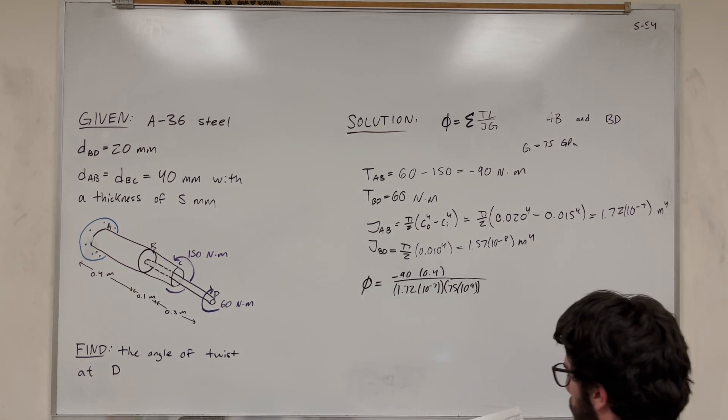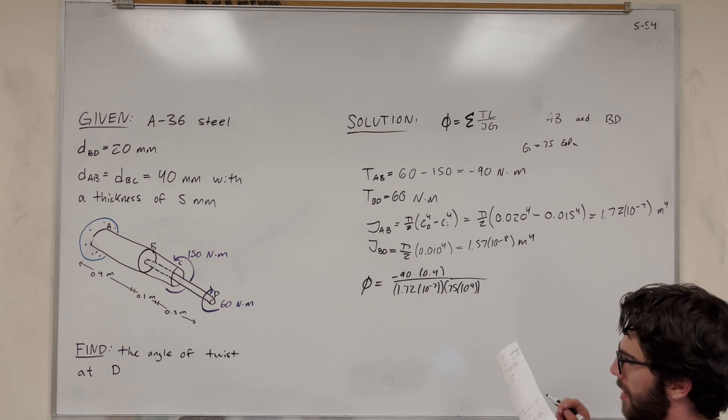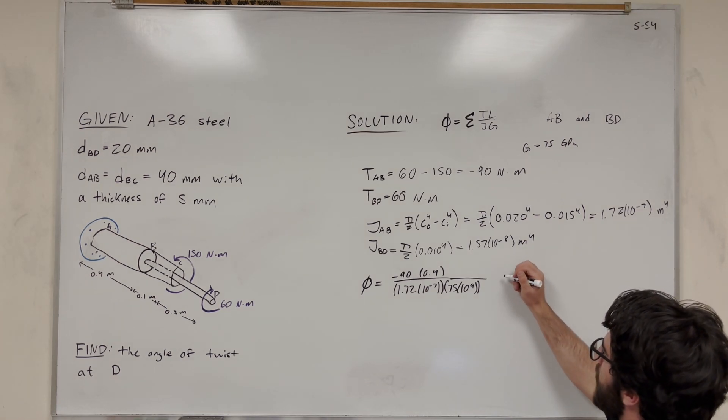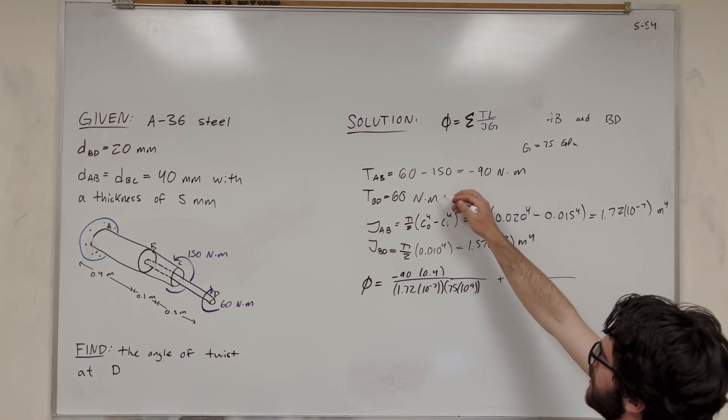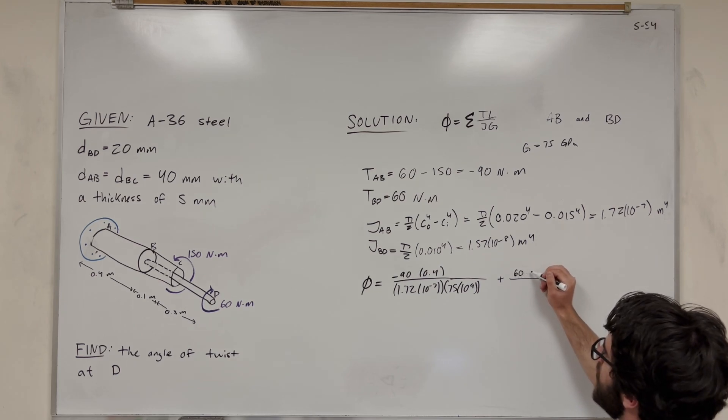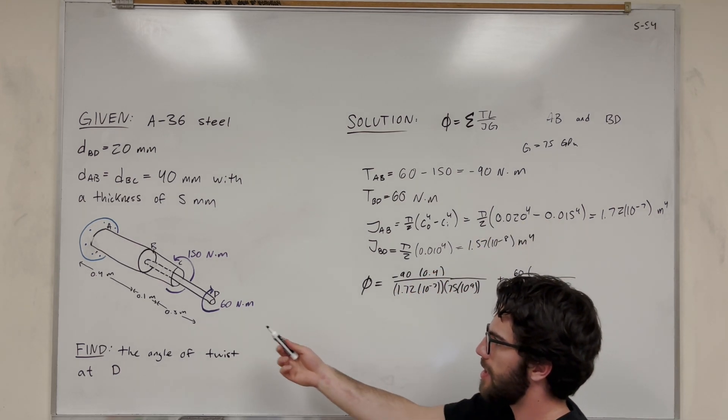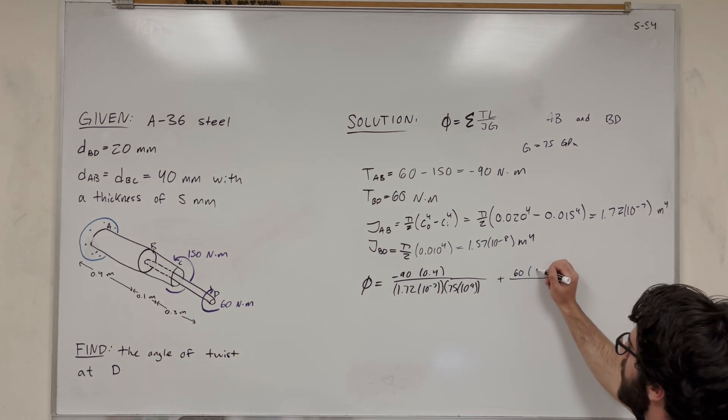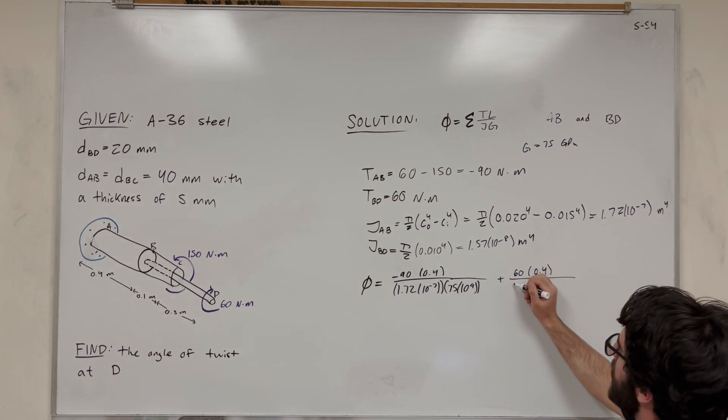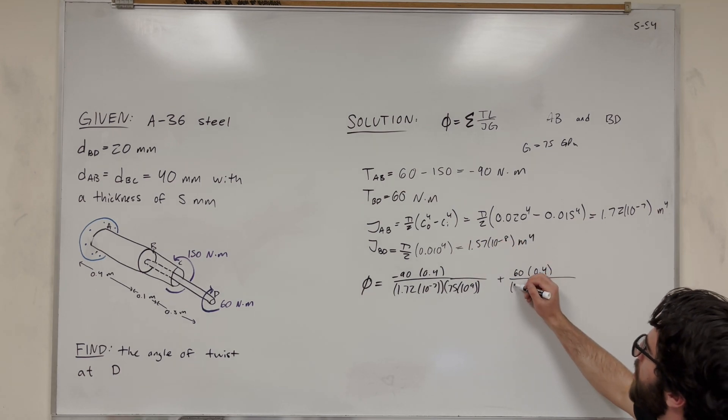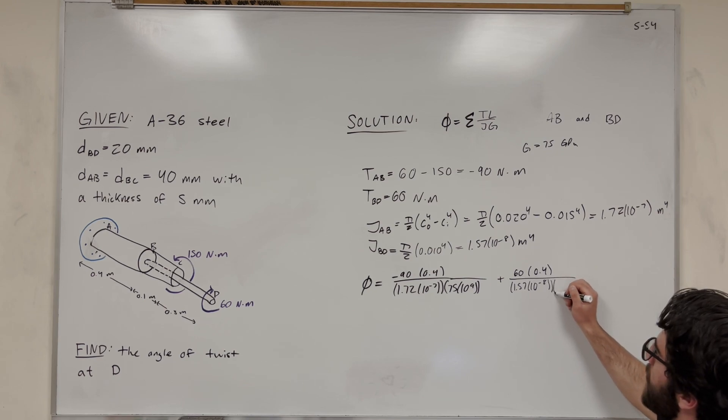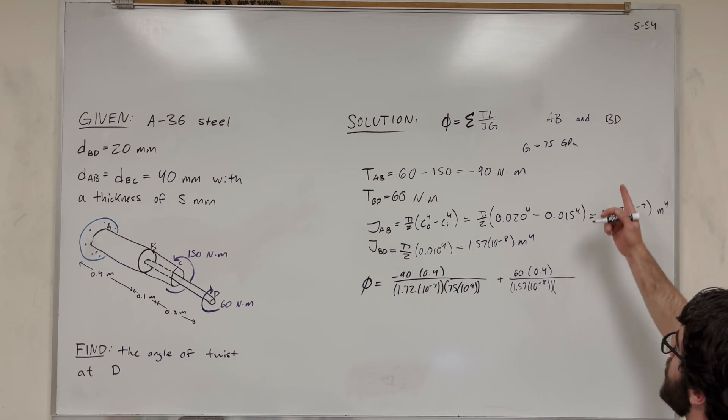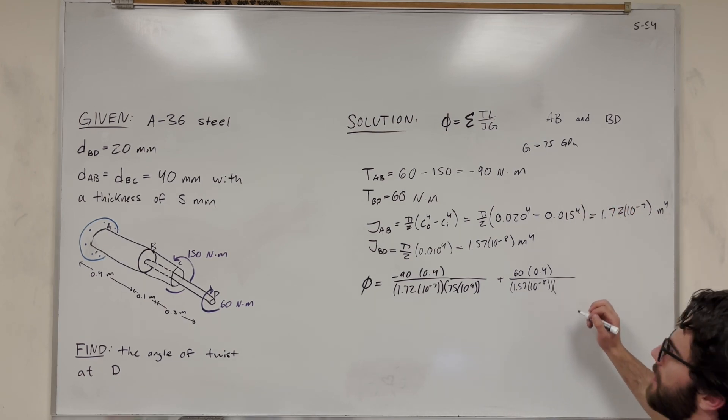So this is our first half here. Then we need to do it for BD. So then we're going to add the next one. And this is a positive 60 torque, so we're going to add a 60 torque. Then we're going to do the length. So the length of BD is the 0.1 meters plus the 0.3 meters. So it's going to be 0.4 again. Then the polar moment of inertia, 1.57 times 10 to the negative 8th. Then we've got to multiply that by the modulus of rigidity, not elasticity if I said that. So this is 75, and then again 10 to the 9th.